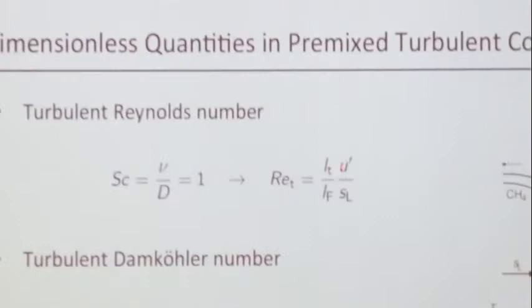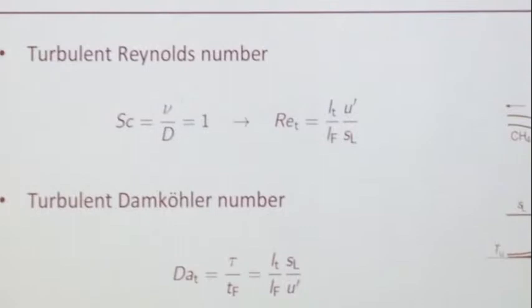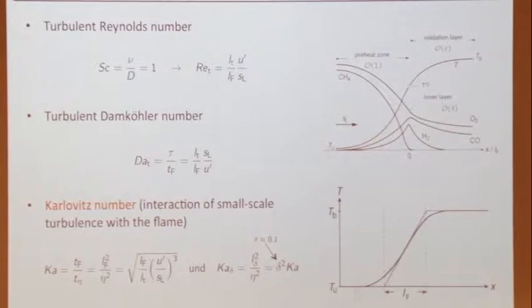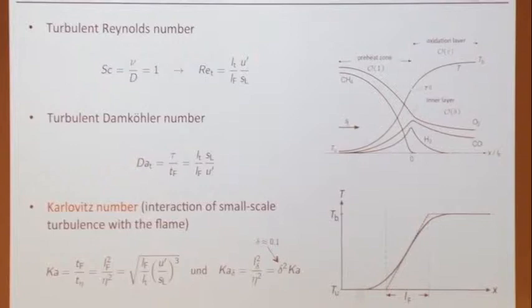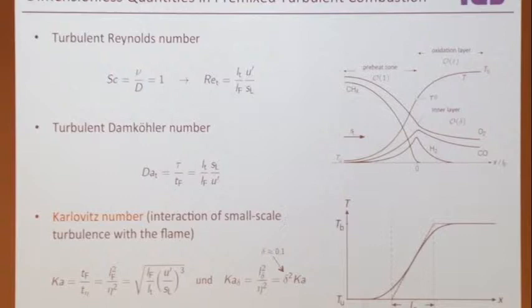These are ratios: L_T over L_F is the ratio of the large turbulence scale to the flame thickness, and U prime over S_L is the ratio of the large-eddy velocity to the laminar flame speed. So that's the Reynolds number.